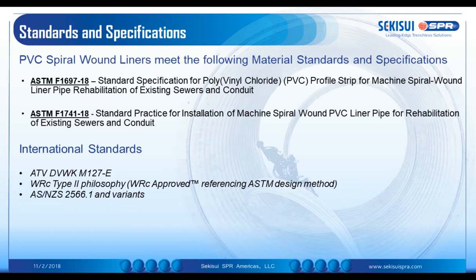There are two ASTMs associated with the PVC machine spiral wound liners. There is ASTM F1697, which is the standard specification for PVC profile strip for machine spiral wound liner pipe rehabilitation of existing sewers and conduit — essentially the material specification. Then there is ASTM F1741, which is the standard practice for installation of machine spiral wound PVC liner pipes for the rehabilitation of existing sewers and conduit. This standard includes the installation method and, within the appendices, the methods for design.